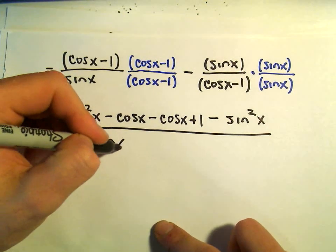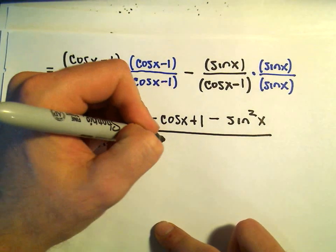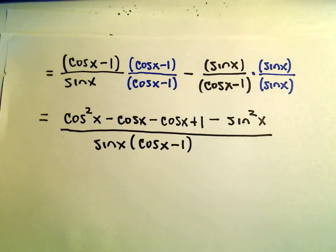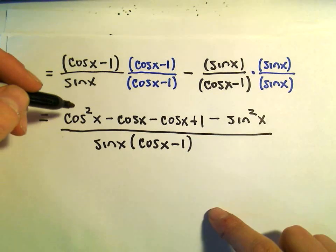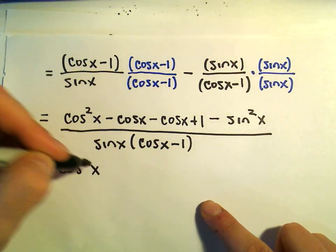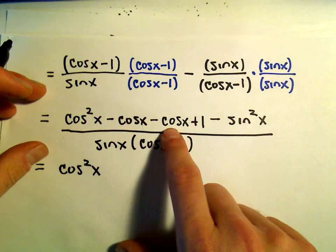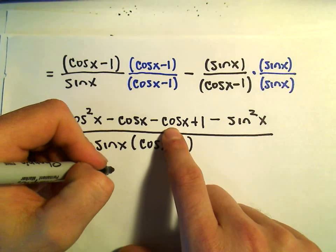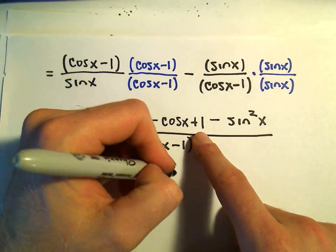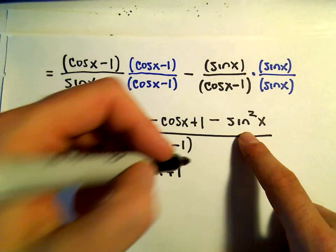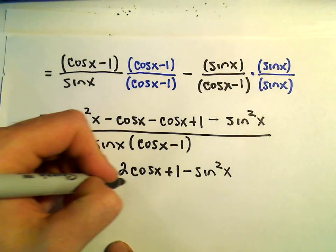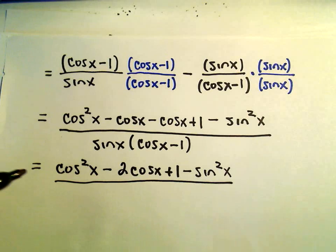In our denominator we just have sine x times cosine x minus 1. Now the question is how do things simplify down? We've got a negative cosine x and another negative cosine x — we can combine those into negative 2 cosine x. We've got our plus 1, and then we still have our minus sine squared x. We'll leave the denominator alone.